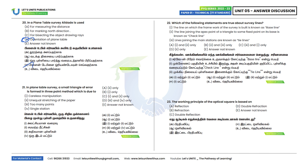Twenty-first question: In a plane table survey, a small triangle of error is formed in the three-point method. What is it due to? The small triangle of error is due to careless manipulation and unequal stretching of paper. Options 1 and 2 are correct. Option C is the correct answer.